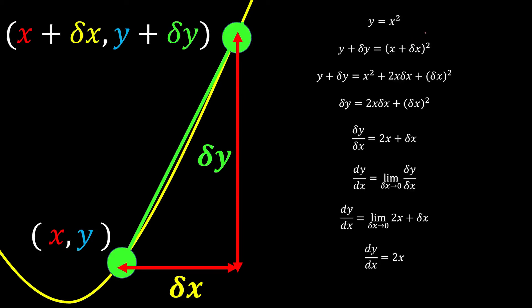Let's have a recap of how we can find the gradient of a specific point. We start with the original equation, and next we're going to apply a small change for x and a small change for y.